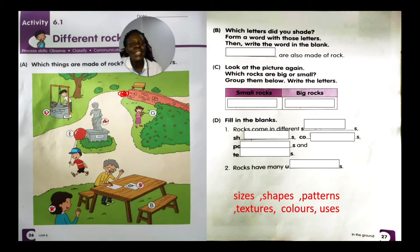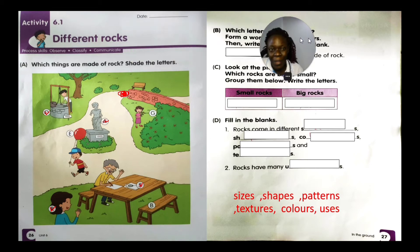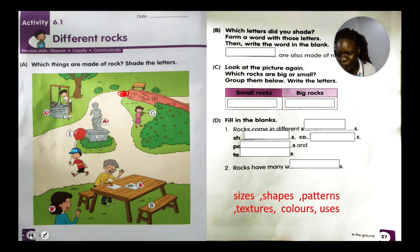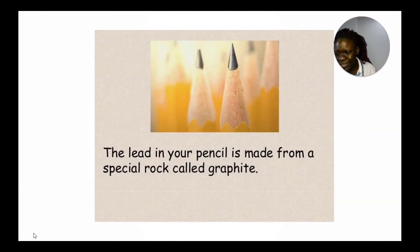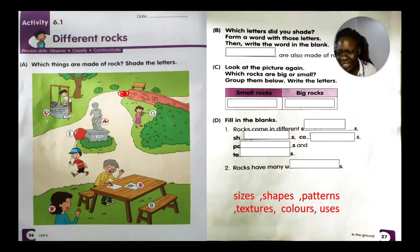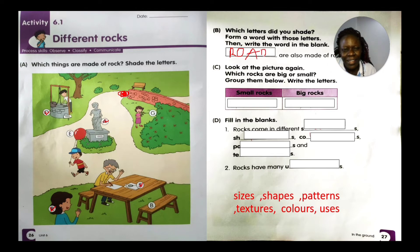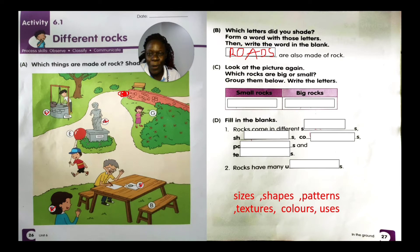Part B: which letters did you shade? Form a word with those letters and write it in the blank. The letters shaded spell R-O-A-D-S. So roads are also made of rocks.